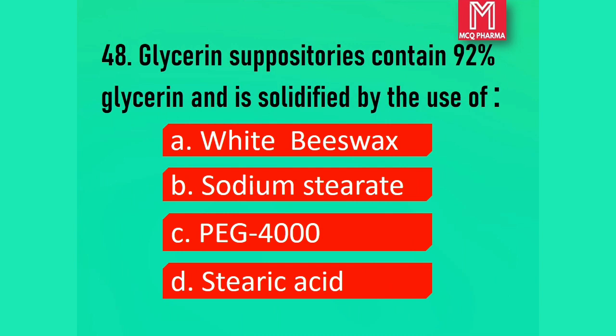Question number 48. Glycerin suppositories contain 92% glycerin and is solidified by the use of: Option A, White base wax. Option B, Sodium stearate. Option C, PEG 4000. Option D, Stearic acid. Correct answer: Option B, Sodium stearate.